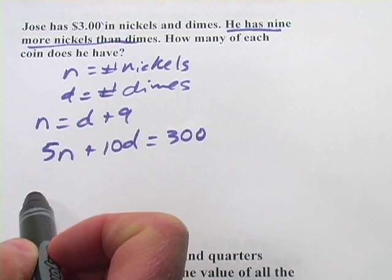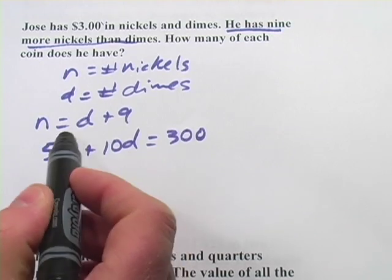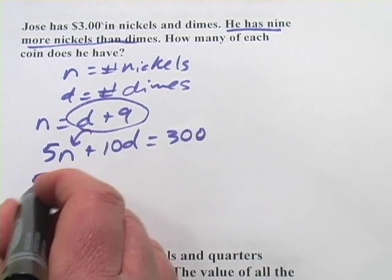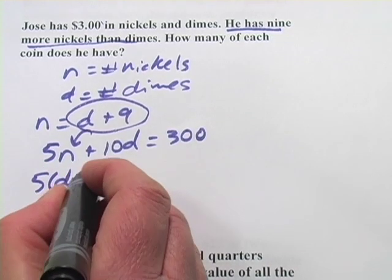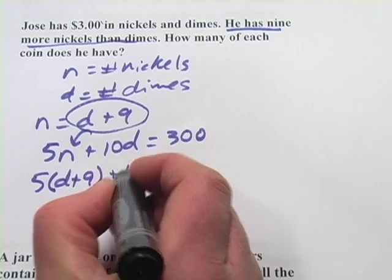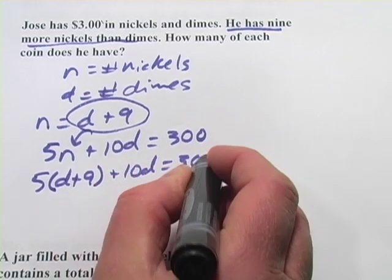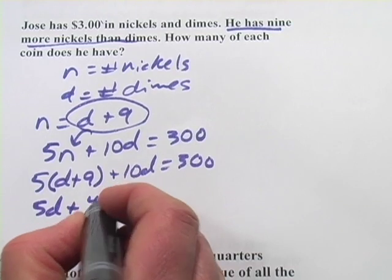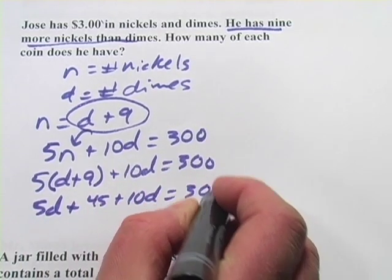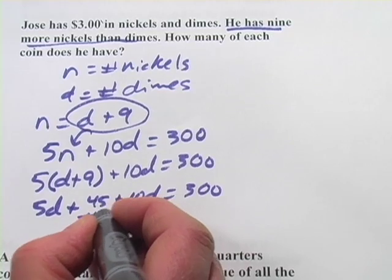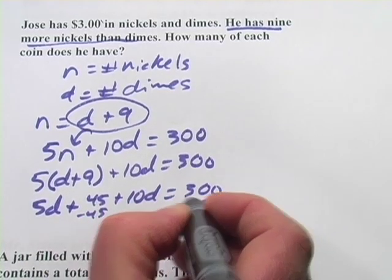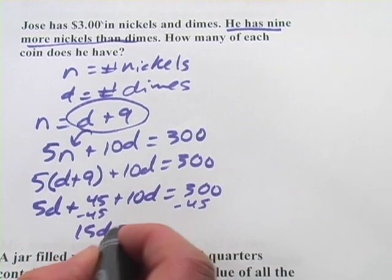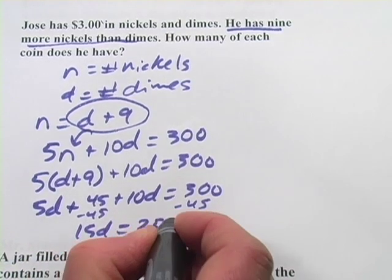Now this one looks like it's set up pretty well for a substitution, so I'm going to take this and put it in for n. So we get five times d plus nine plus ten d equals three hundred, and that would be five d plus forty-five plus ten d equals three hundred. We'll subtract forty-five, and we add like terms, five d and ten d is fifteen d equals two hundred and fifty-five.